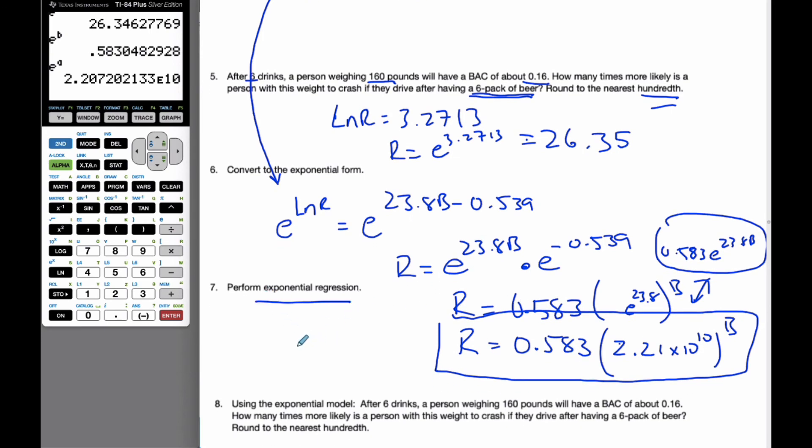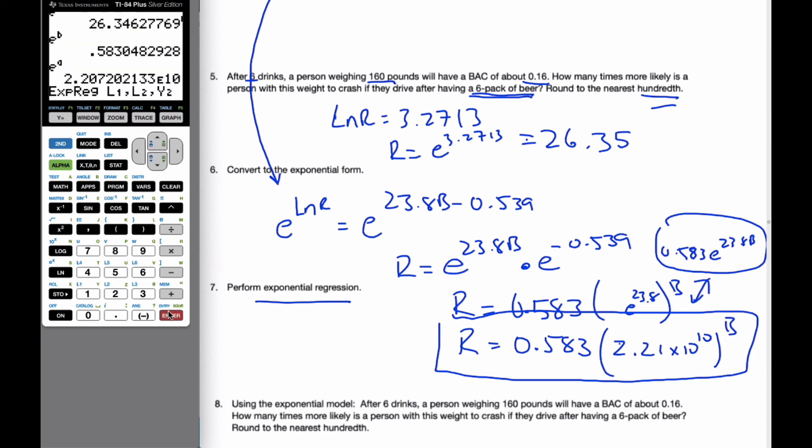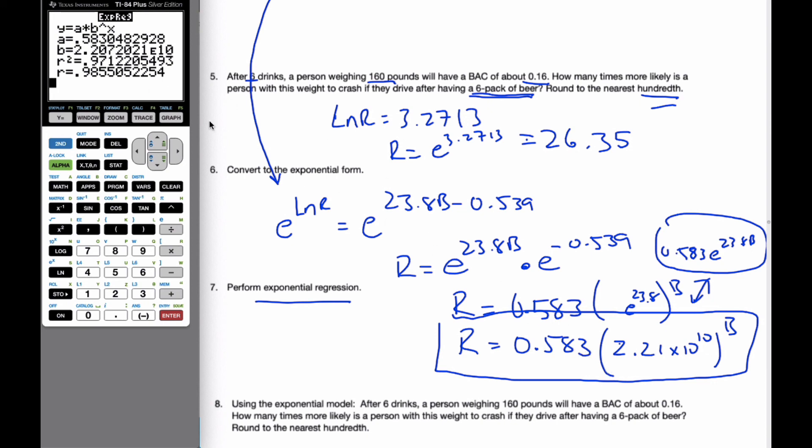If I would do the exponential regression, my calculator will do that. If I go now and I calculate, if I go down, I want exponential regression. So number 0, I'm going to do it for L1, and I'm going to go to the original values of L2. And let's store the equation into Y2 in case I need it. And when I calculate it, you will see that indeed I get these values here, 0.583 and 2.27 times 10 to the power of 10. And so this is the form it takes.